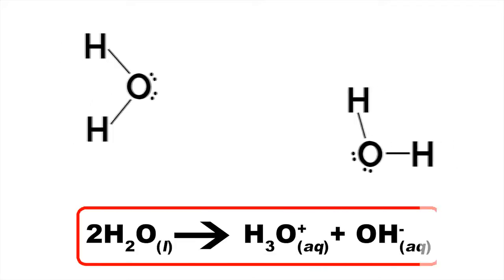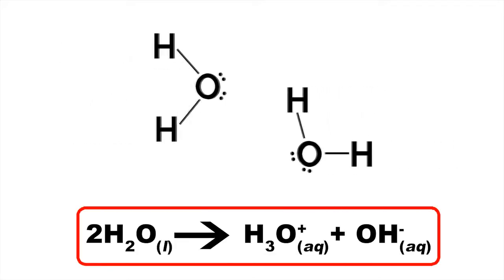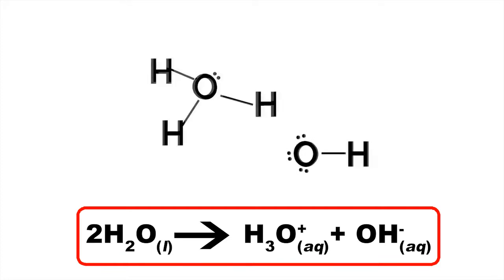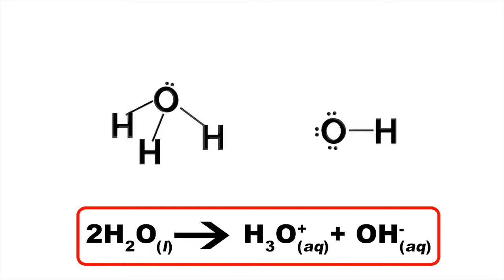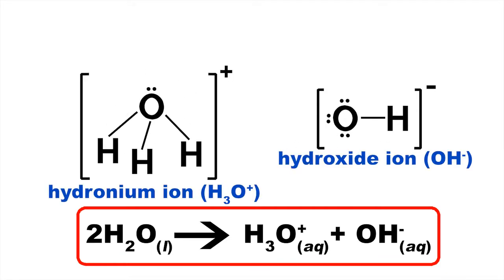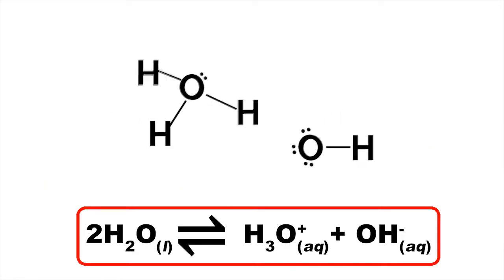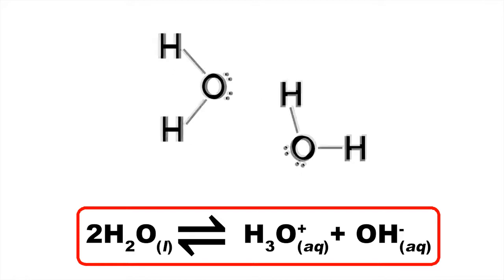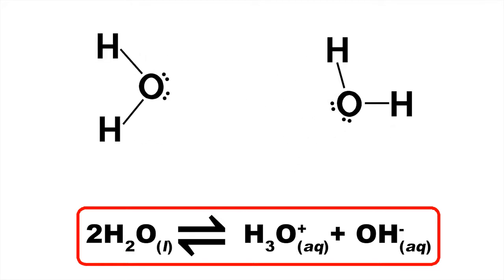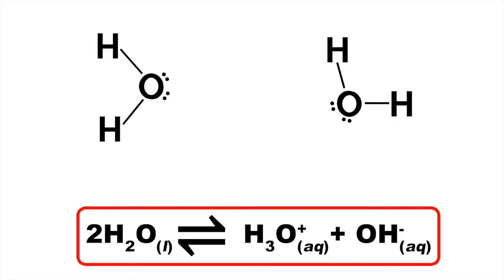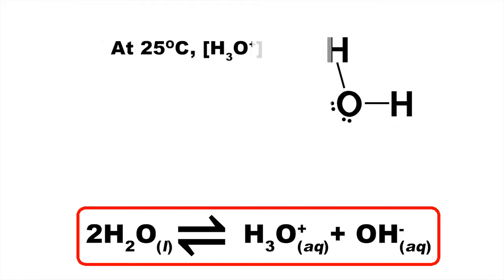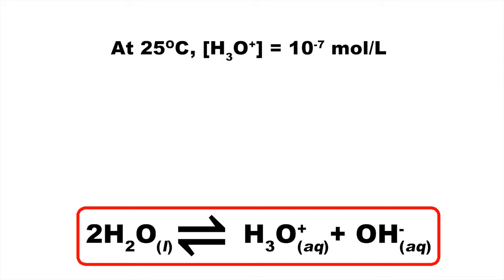A small proportion of water molecules ionize, producing hydronium ions and hydroxide ions. This reaction is in equilibrium with a reverse reaction, in which hydronium and hydroxide ions exchange a proton to form water molecules again.